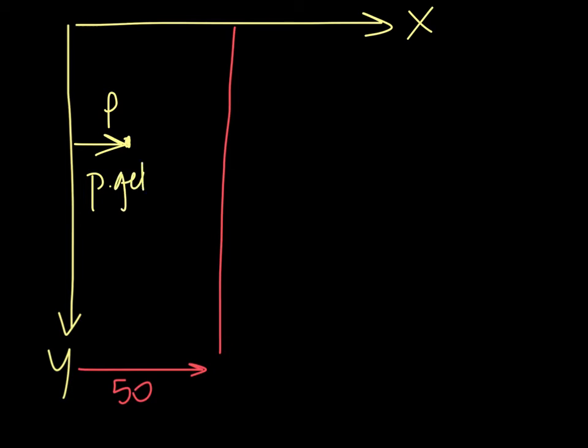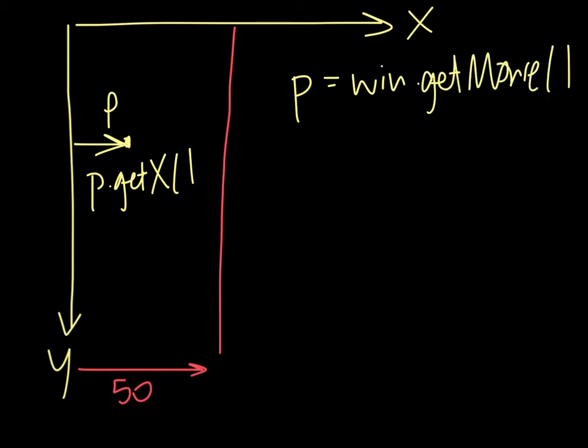The length I'm interested in is that length there, the p dot getX distance. So look how my code might work. So in my code, I would have a p storing the windows dot getmouse. Then I can pass the x value of p, store it by getting out of this point, getX,